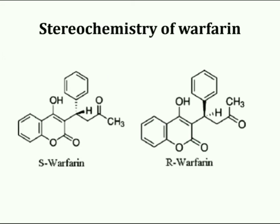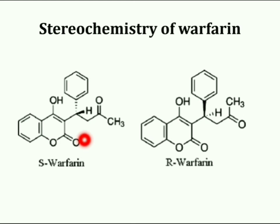Stereochemistry of warfarin: warfarin is a chiral compound with an asymmetric carbon centre, and it is found in two forms — S-warfarin and R-warfarin. The clinically utilised preparation is racemic, but the enantiomers are not equipotent. S-warfarin is at least 4-fold more potent as an anticoagulant than R-warfarin.